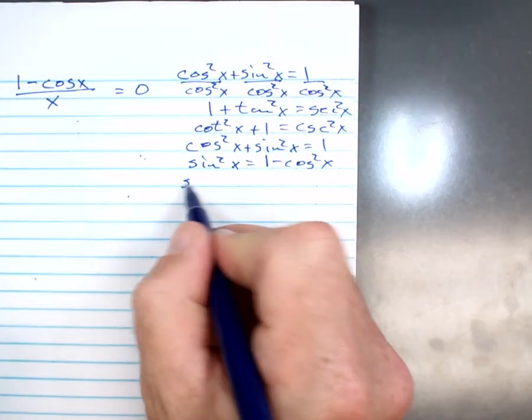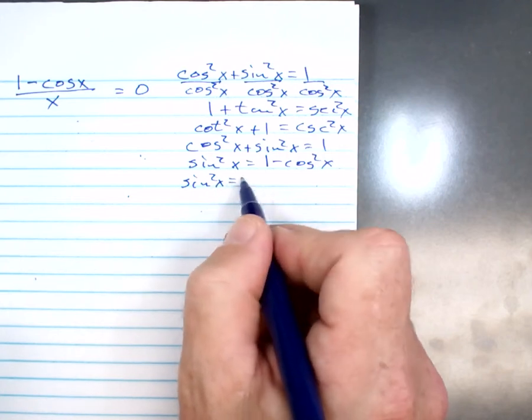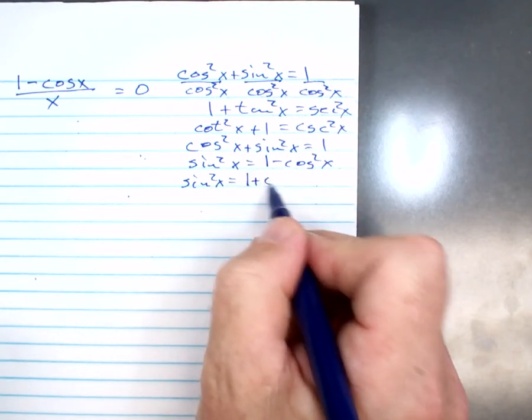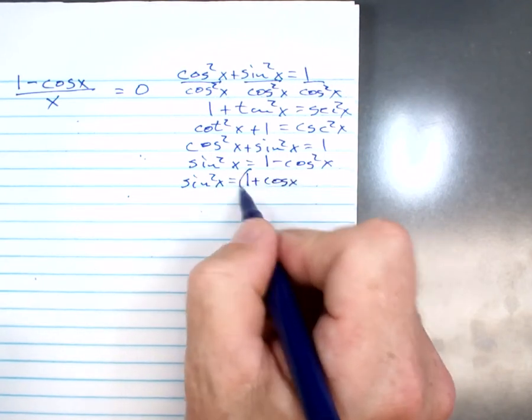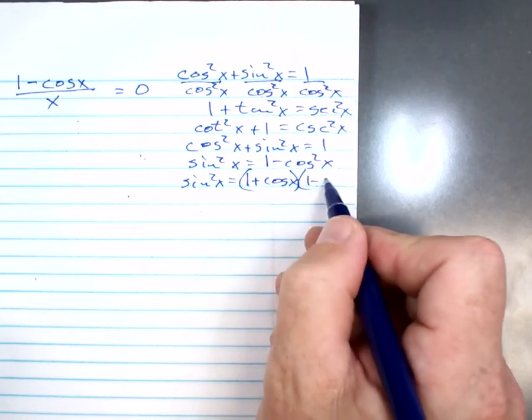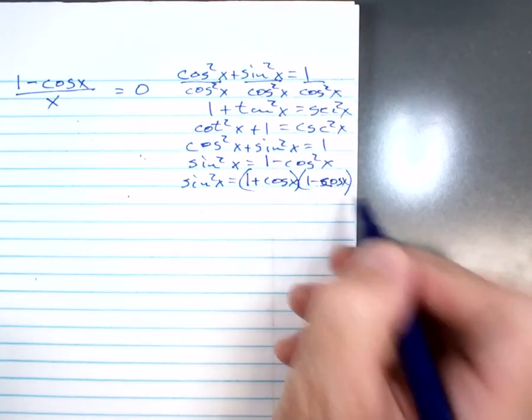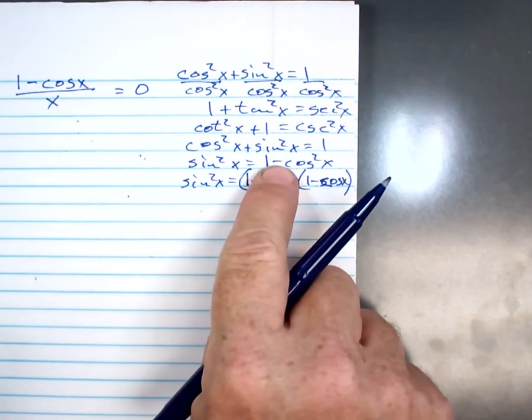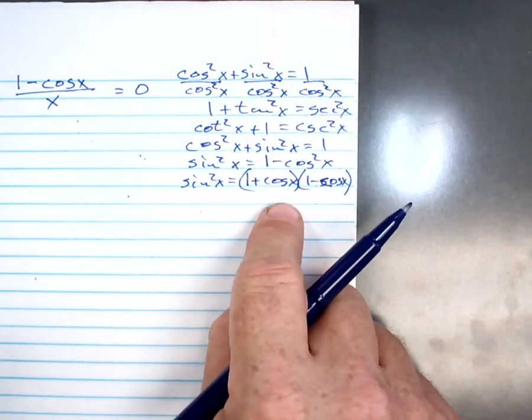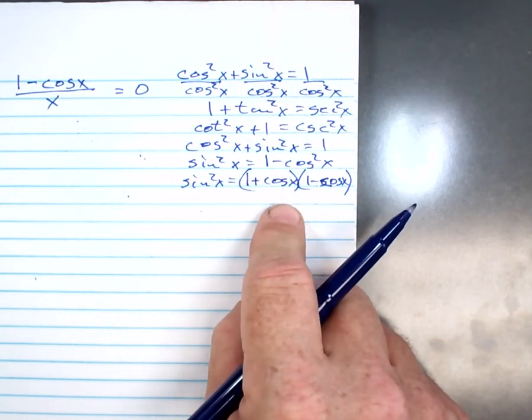And then I can write this as sine squared x equals 1 plus the cosine of x times 1 minus cosine of x. This right here is a product of conjugates. Are we okay?